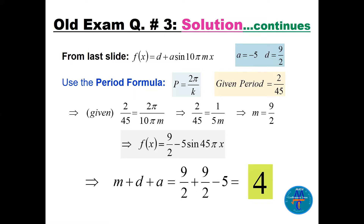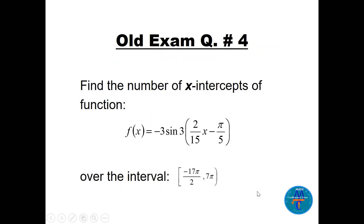For m, use the period formula: 2π/k = 2/45, where k = 10πm. Solving: 2π/(10πm) = 2/45, which simplifies to 1/(5m) = 1/45·... canceling gives m = 9/2. So d = 9/2, a = −5, m = 9/2, and m + d + a = 9/2 + 9/2 + (−5) = 4.